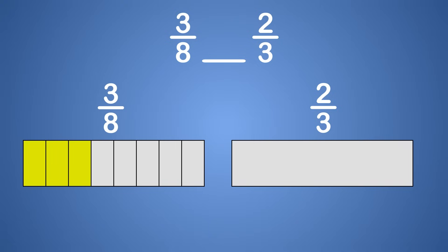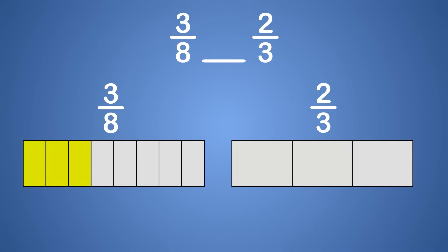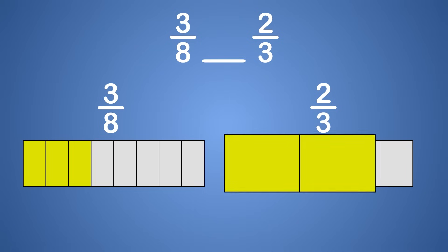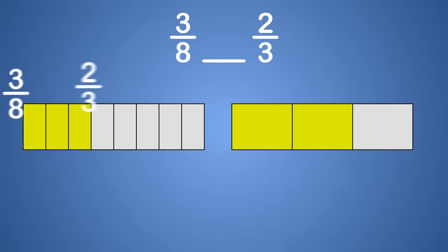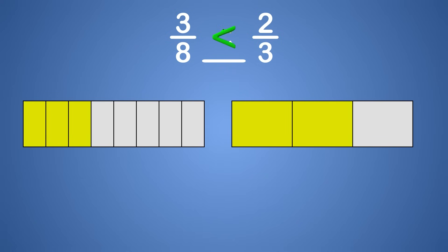Now we look at the rectangle on the right. Partition the fraction on the right into 3 equal parts. Now we shade 2 parts. This represents 2 thirds. Notice the length of the shaded region in the fraction on the right is longer than the shaded region in the fraction on the left. That means 3 eighths is less than 2 thirds. We will write a less than symbol in the blank, so the problem reads 3 eighths is less than 2 thirds.